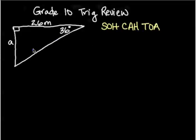This is the example we did in class. Right angle triangle, 36 degrees, and this is 26 meters long. Our goal is to find side A.